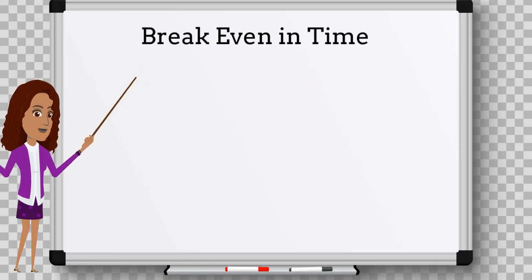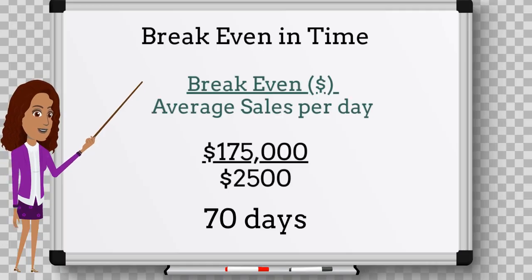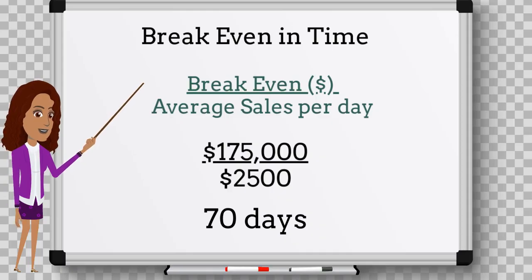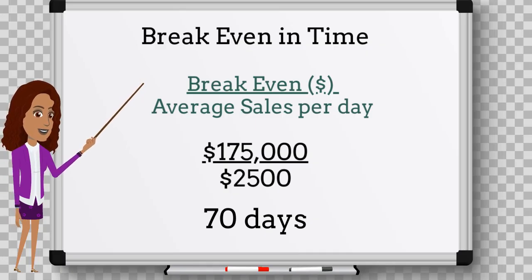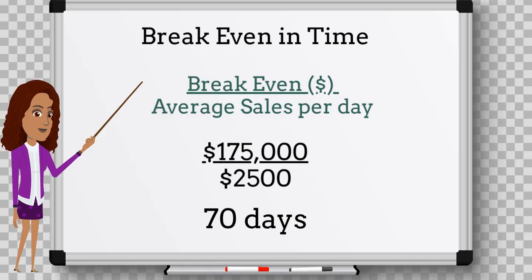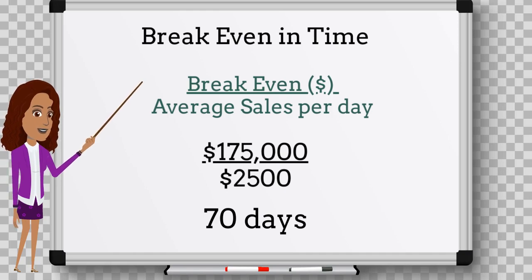Let's say the t-shirt factory wanted to calculate the number of days it would take to break even. To do this, divide the break-even expressed in monetary values by the average sales per day. For example, if average sales per day is $2,500, then the number of days to break even equals $175,000 divided by $2,500, which equals 70 days. If the firm wanted the break-even in months, work out the average sales per month and divide by that instead — same thing with years.